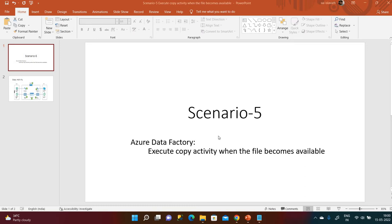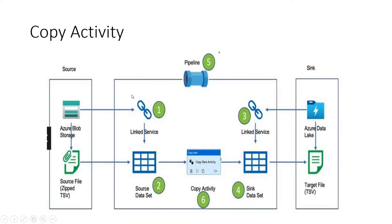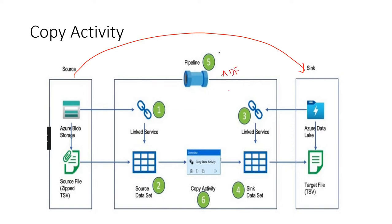Welcome back to Azure Data Factory real-time scenarios. The scenario is: execute copy activity when the file becomes available. We are going to check the source — which is Azure Blob Storage — to see if the file is available or not. Whenever the file is available, we need to copy it to the sink, which is Azure Data Lake Gen2 Storage.